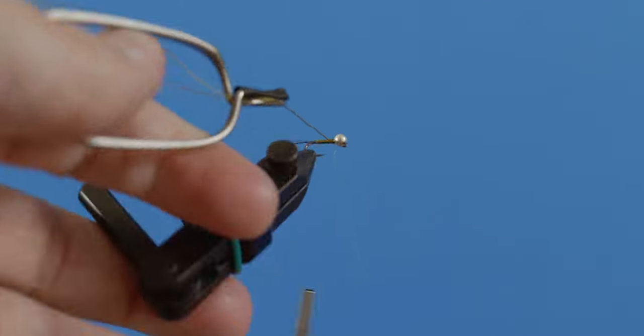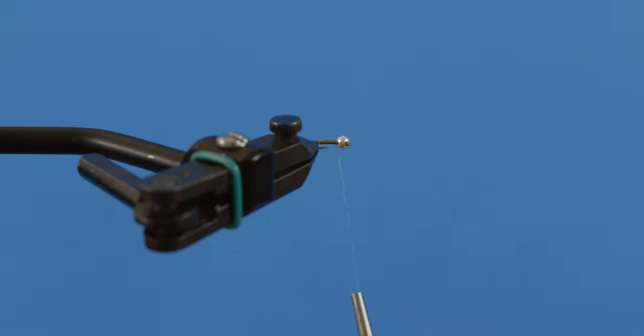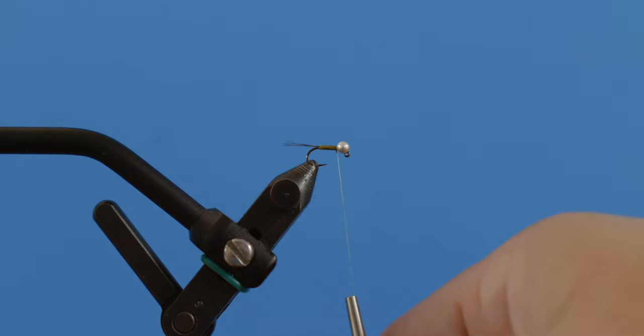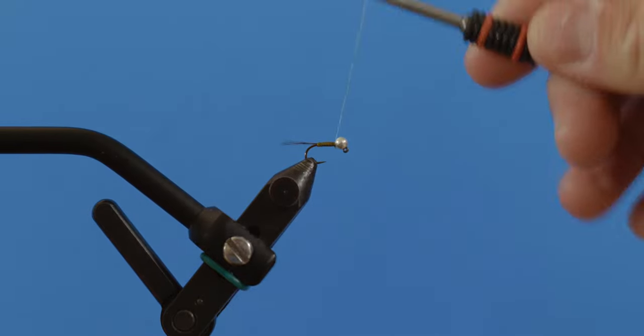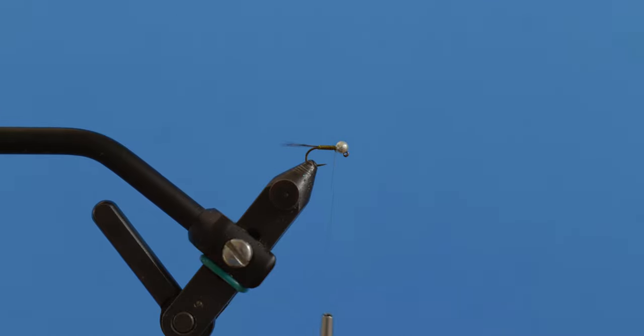And then we're going to capture that with our other thread. I'm using a really thin thread to tie the fly with because I don't want to create a bunch of bulk. You could tie this with that 140 denier, but then you would get a bunch of bulk and we don't want that. So I'm tying this with an 18/0 thread so that I can make a lot of wraps without causing any issues.